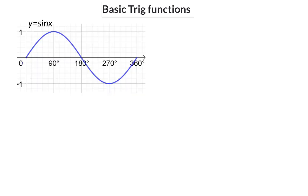We're going to have a look at the graph of y equals sin x. This graph starts at the point (0, 0), and it takes 360 degrees to complete one full wavelength. The graph has turning points at (90, 1) and again at (270, -1).